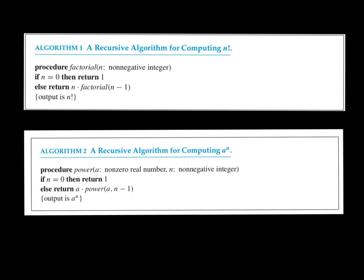Finally, we have a couple of recursively given algorithms. This is a great opportunity to work through the algorithms with some actual examples — you've probably gone far enough in your programming classes to actually write and run these. The first is a recursive algorithm for computing factorial. The procedure takes n, a non-negative integer. If n equals 0, immediately return 1, because 0! is defined to be 1.